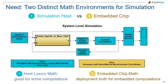System-level simulations actually require two distinct math environments. In this system-level model, we show in yellow the portions of the design that will be generated into code that will run on your embedded device — that portion needs the math that will be used on the embedded chip. In turquoise are the rest: that's the pure simulation, typically of the analog world. It also includes the solvers, and for those, we want the nicest math we can get.